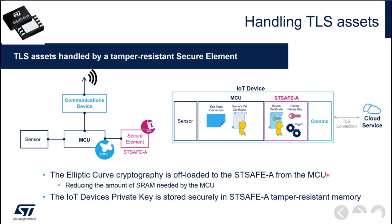Handling the TLS assets: the architecture lets us use silicon security features to build a trusted environment protecting access to critical keys and credentials. On the MCU (STM32) side, we have less critical information like the endpoint credentials and the server CA certificate used to authenticate the server. The critical TLS assets — the device certificate and the device private key — are stored in the STSAFE A.